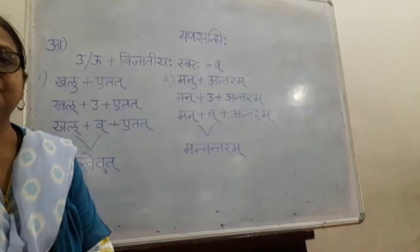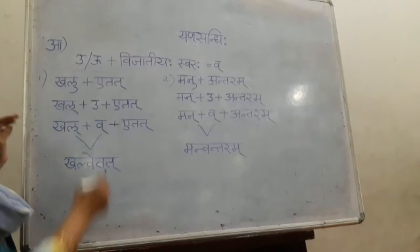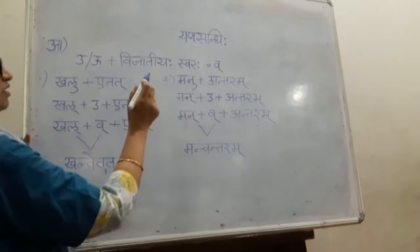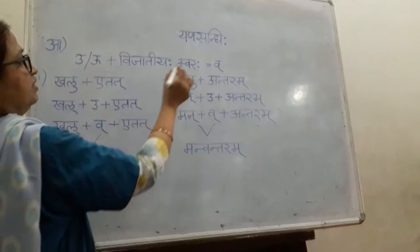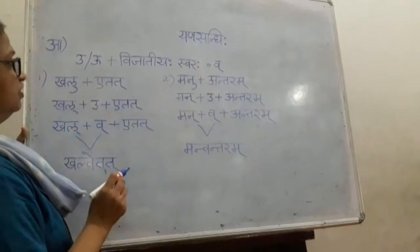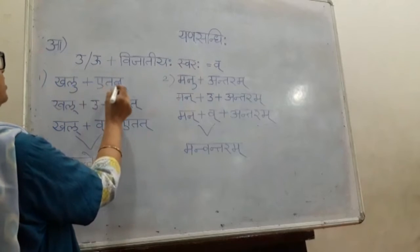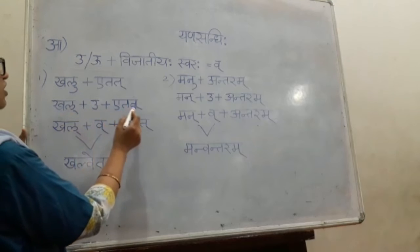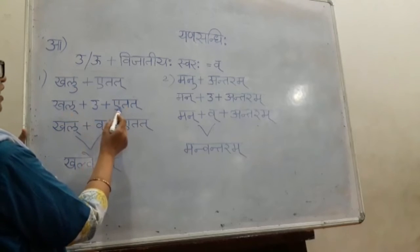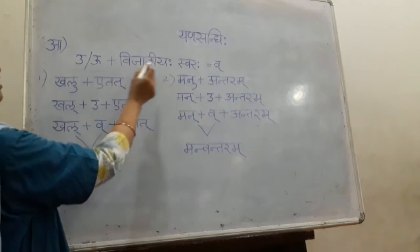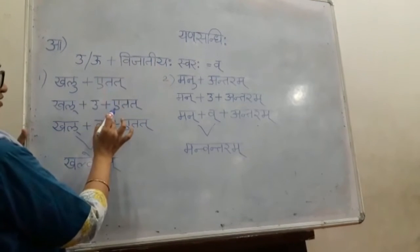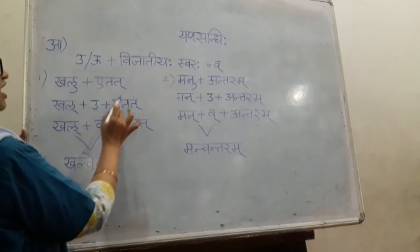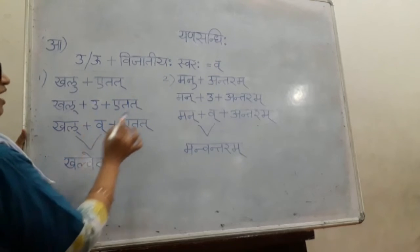Now children we will see one more rule of Yana Sandhi. When rasva u or dīrgha u is followed by any other vowel except u, then u will be replaced by v halanta. Example is khalu plus athar. Khalu is ending in u. In front of that we have athar, so we have a in front of u. We want any other vowel but not u again — we have a, which is not u. So in front of u we have a, so this u will be replaced by v halanta.